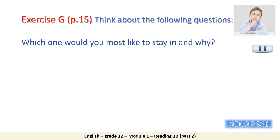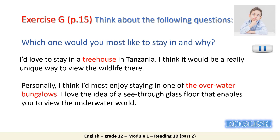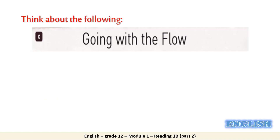Every one of us has his own choice. Some people may choose to stay in a tree house: 'I'd love to stay in a tree house in Tanzania — I think it would be a really unique way to view the wildlife there.' While someone else would say, 'Personally, I think I would most enjoy staying in one of the overwater bungalows. I love the idea of a see-through glass floor that enables you to view the underwater world.' What you see is one of the features in text C. Can you guess which feature it is?